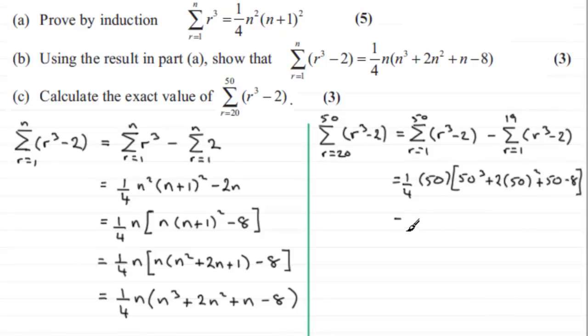When n is 19, so we've just got to do a quarter of 19 and again we'll put this in square brackets. We've got 19 cubed plus 2 times 19 squared plus 19 and then minus the 8.